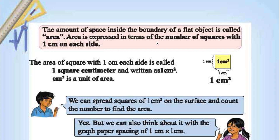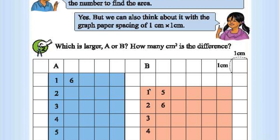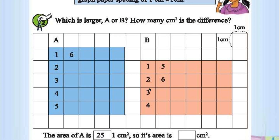This portion is called Area. Area is expressed in terms of the number of squares with 1 cm on each side. So the unit for area is cm² or m². 1 cm² is written as 1 cm². cm² is the unit of area. 1 cm² means 1 cm length and 1 cm breadth. All these are 1 cm² areas.